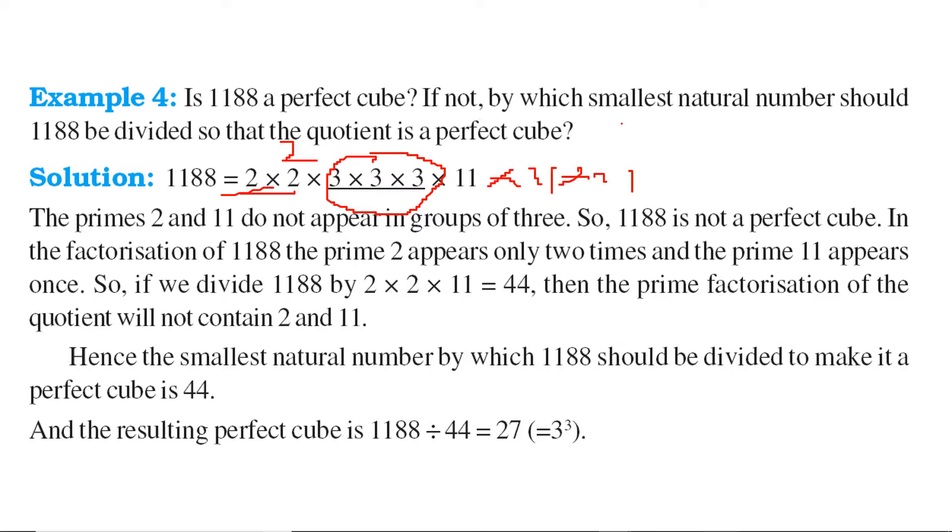So if not, by which smallest number should this be divided so that the quotient is a perfect cube? So if we divide, if we can get rid of 2 into 2 into 11, we can find that this number will become a perfect cube. So divide it by 2 into 2 into 11. So when you divide it by 2 into 2 into 11, that is actually 44, you get 27 which is a perfect cube, that is 3 cubed.